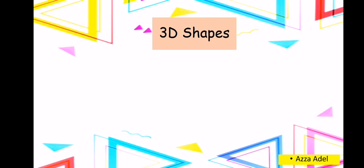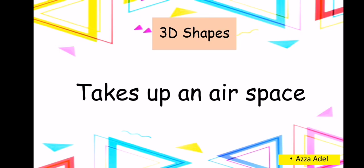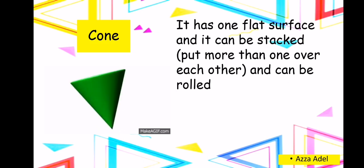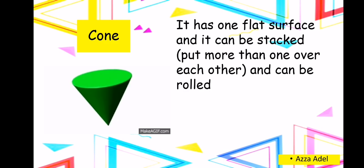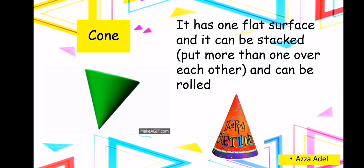Now let's discuss the 3D shapes. What are 3D shapes? They take up airspace — it means they have a space from inside. Like a cone! A cone has one flat surface on the bottom and it can be stacked, which means you can put things over each other.